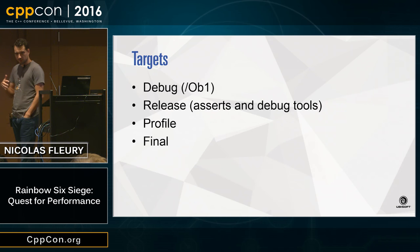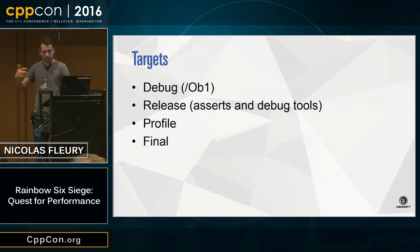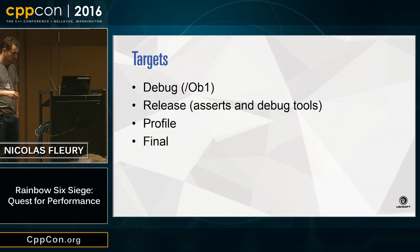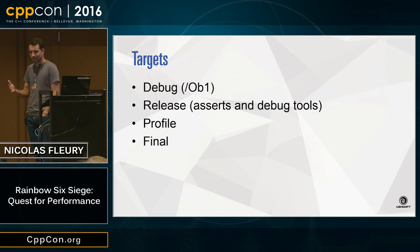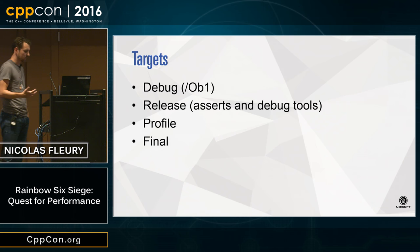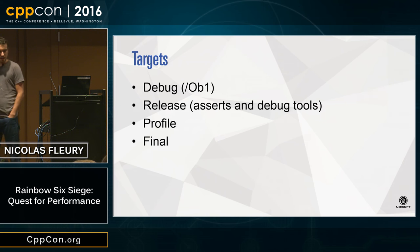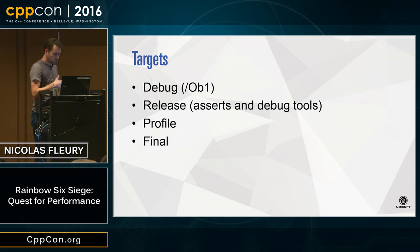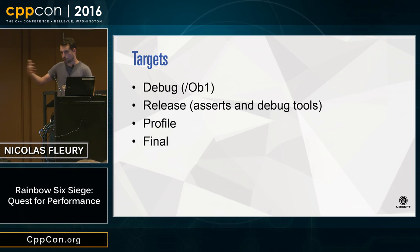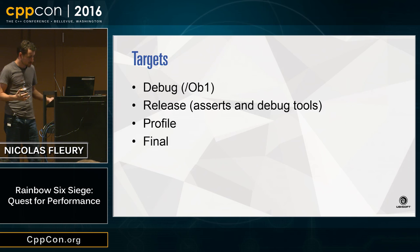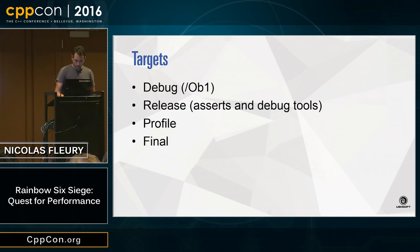I want to quickly mention our different build targets. We have our debug build — we use one level of inlining, the Ob1 compiler flag with the Microsoft compiler. The release build is what we release on the production floor, not to the public — it's the same code with asserts and bug tools, just optimized. The profiling build has minimal utilities left — just profiling utilities — and we try to have performance as close as possible to the final build delivered to the public. We also have a final build with link-time optimization and other variants, but overall these are the four main targets.